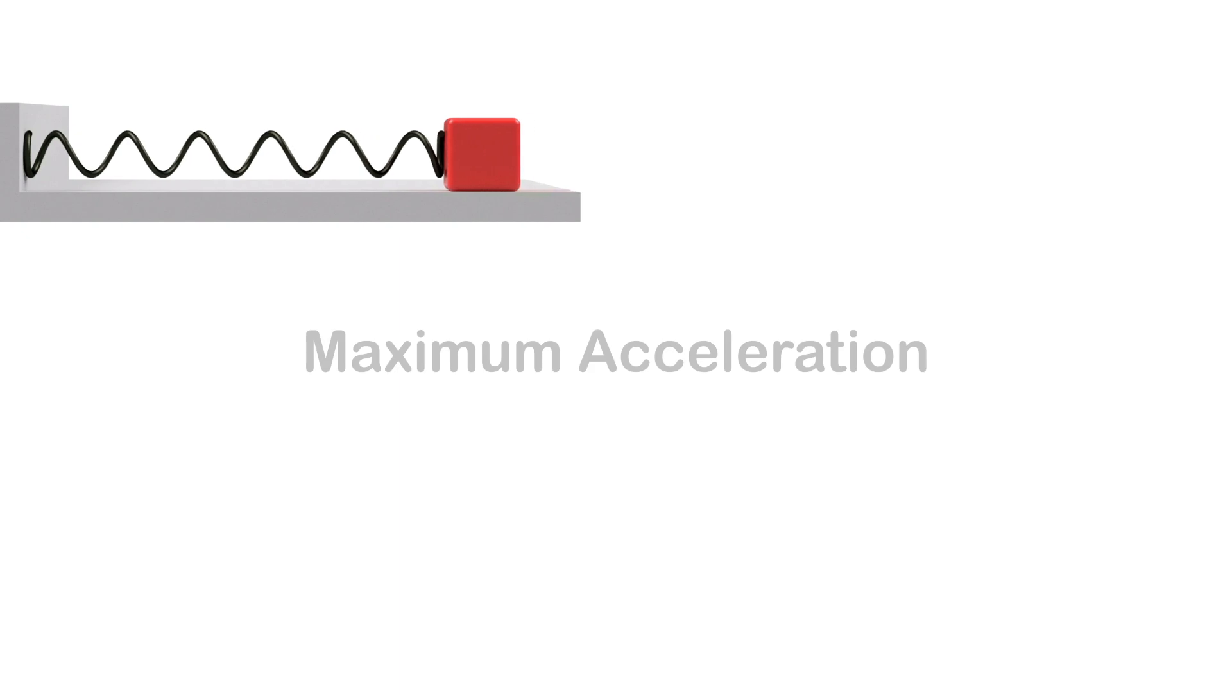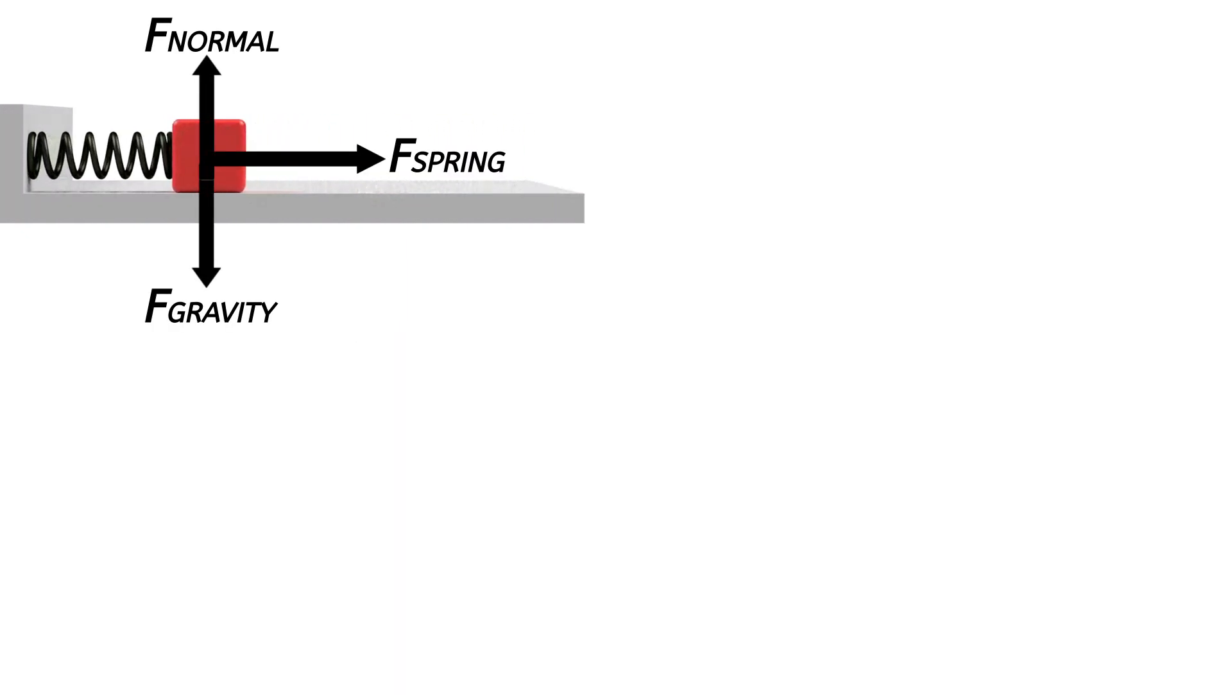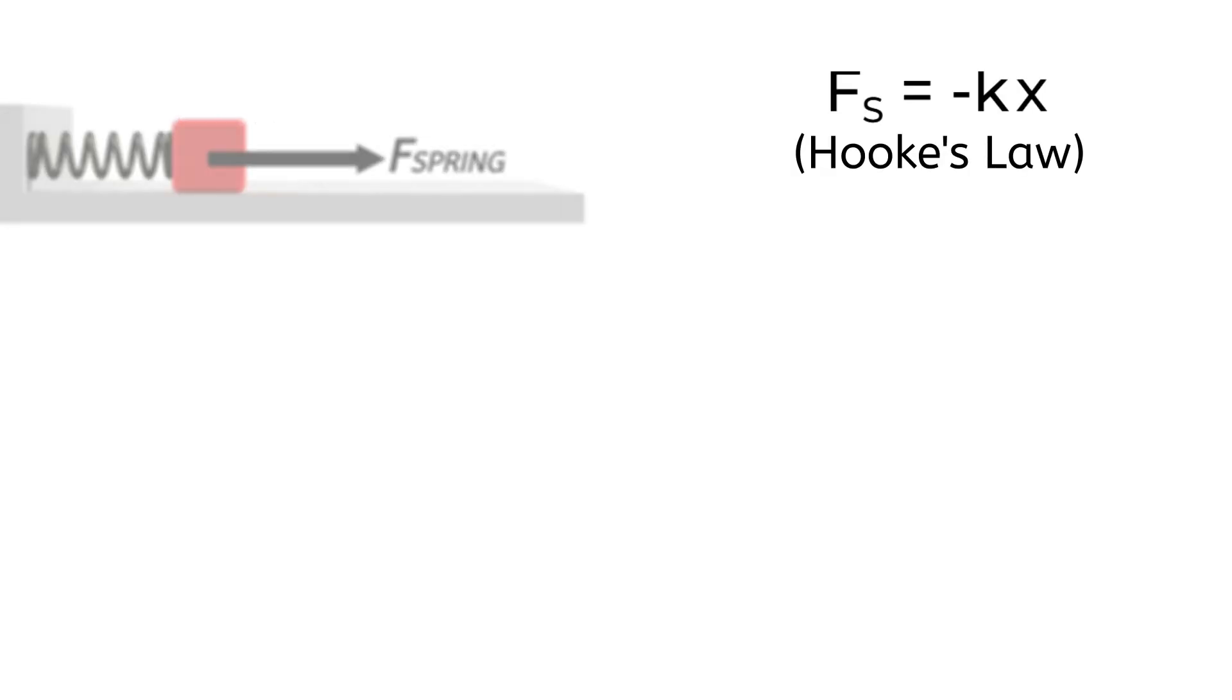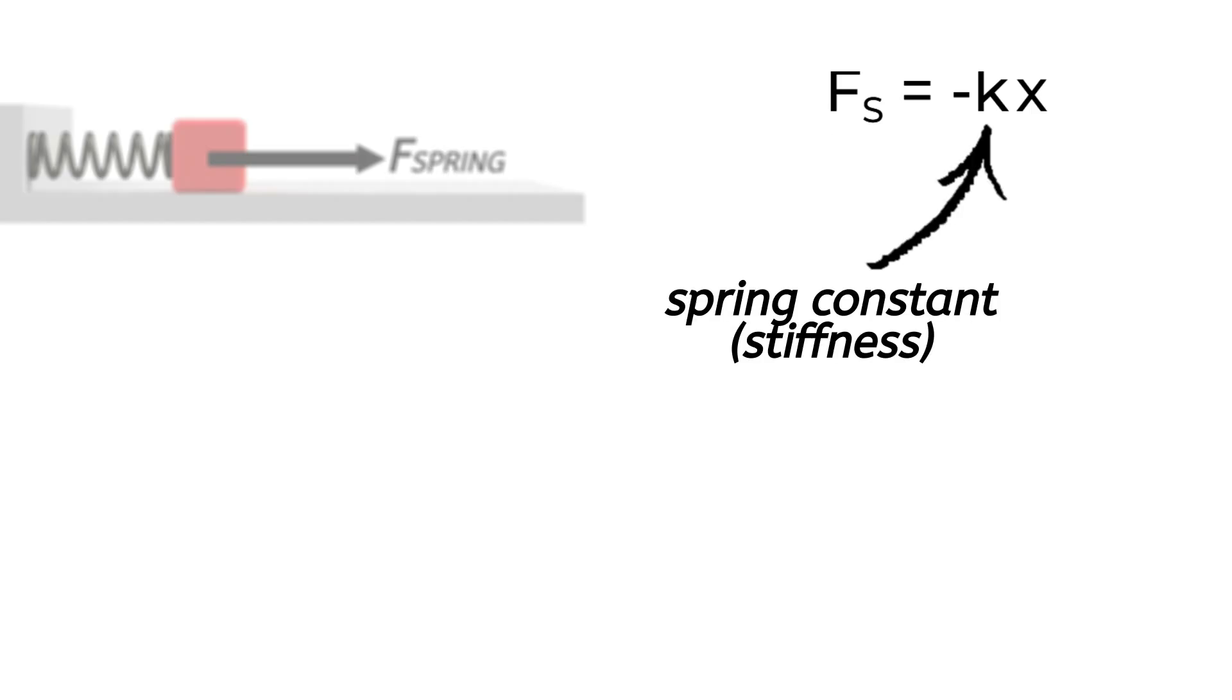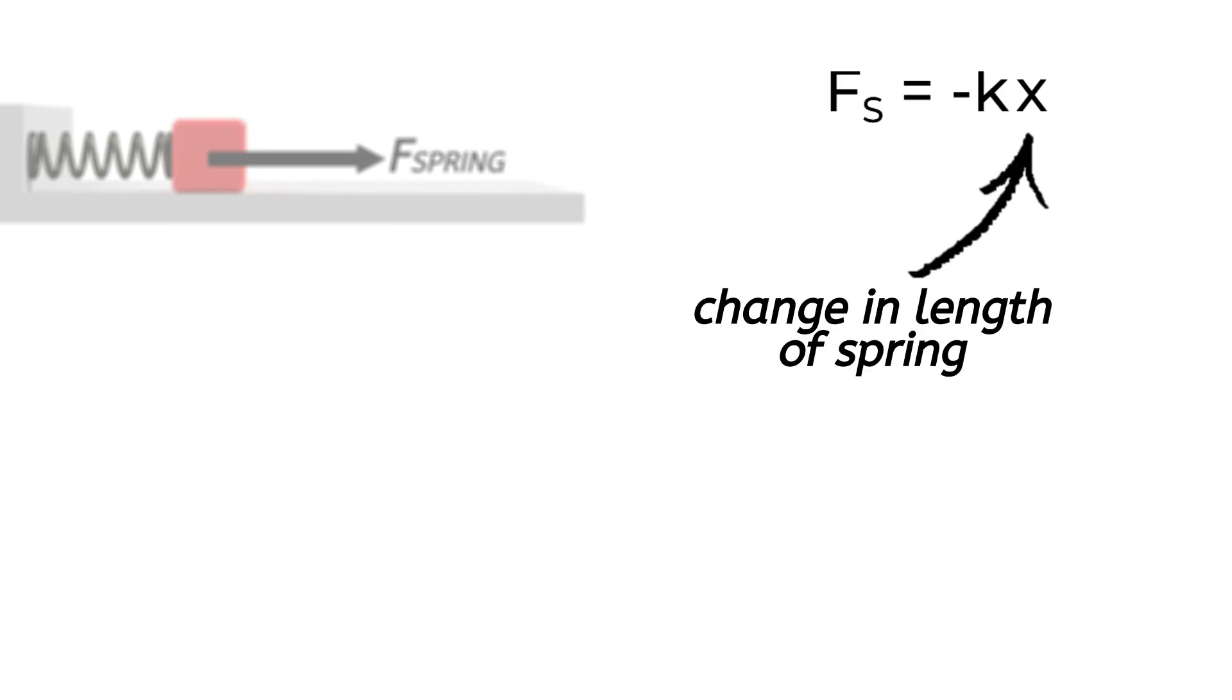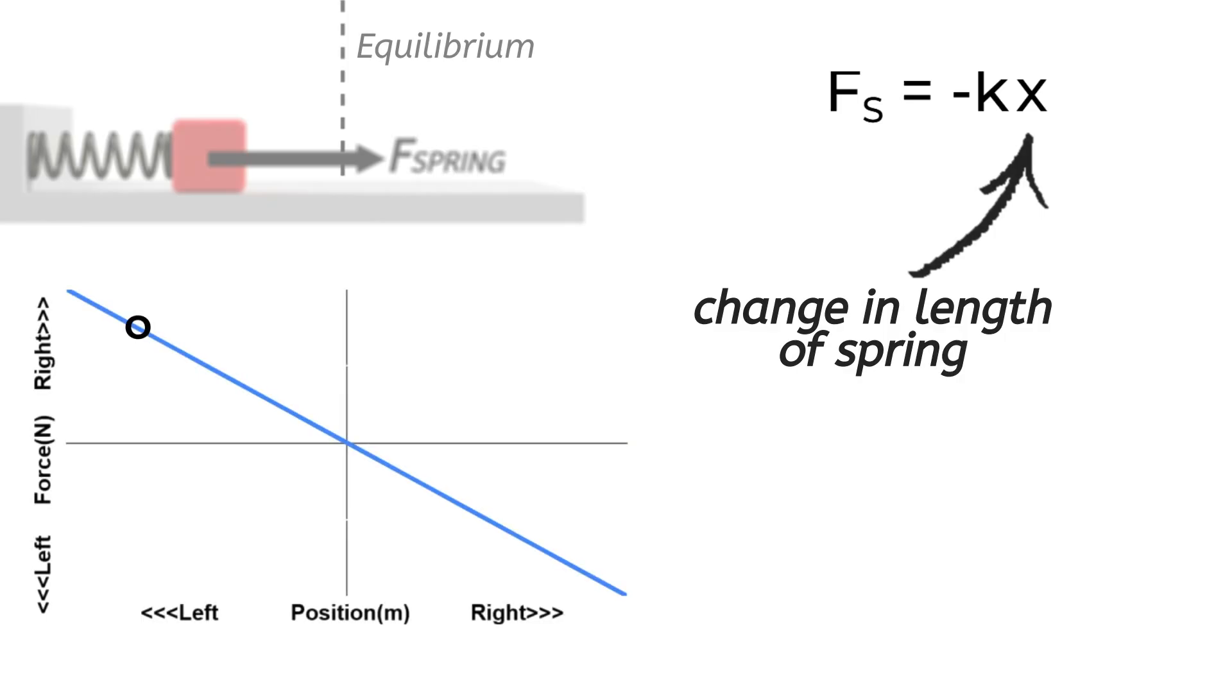Starting with the maximum acceleration of the block, if you look at the forces acting on the block, it's only the force by the spring that causes the block to accelerate. The equation that governs the force by an ideal spring is called Hooke's Law, which tells us that the force by the spring is equal to negative kx, where k is the spring constant, the stiffness of the spring. x is how far the spring has been stretched or compressed from equilibrium, or its natural length.